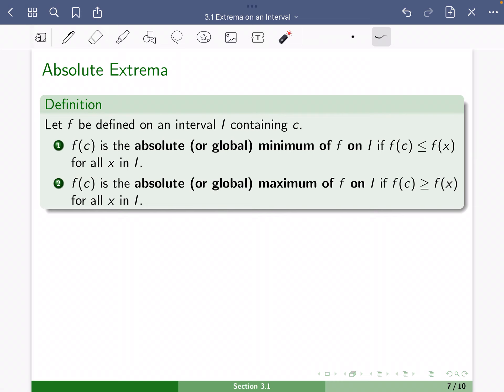And it's an absolute or global maximum on that interval if our function value at that point c is at least as large as everything else in the interval.